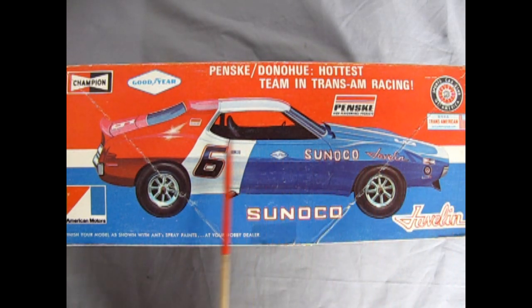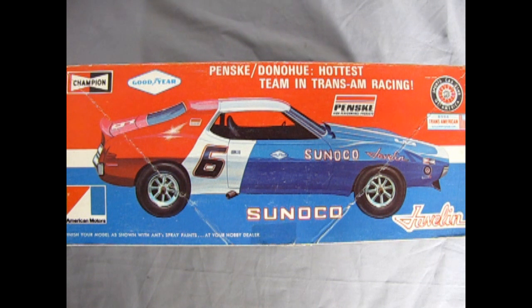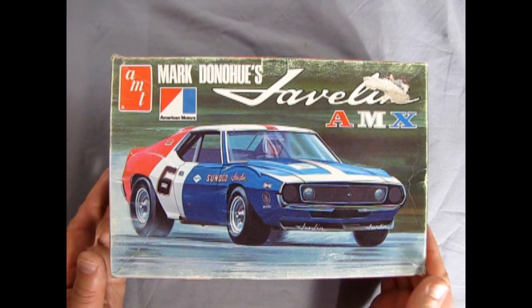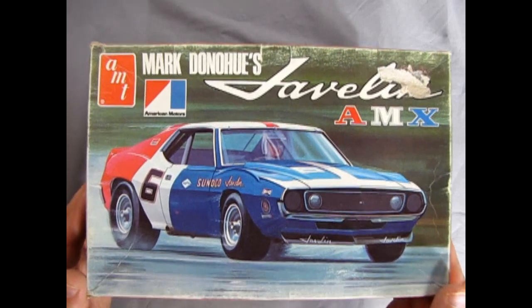And here we have a nice illustration of the actual car and how it looks. Sadly, Mark Donahue died at the Austrian Grand Prix on the Ousserreich ring midway through the 1975 Formula One race season. He was only 38. So now let's open up the lid on Mark Donahue's Javelin AMX and see what's inside.